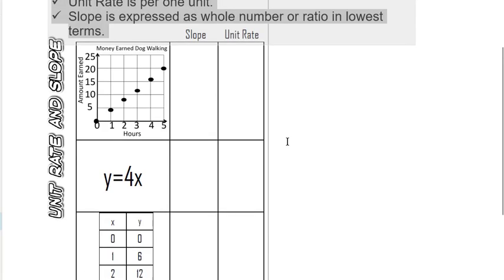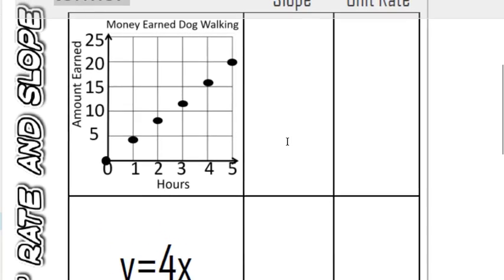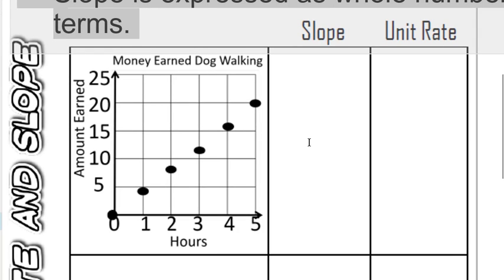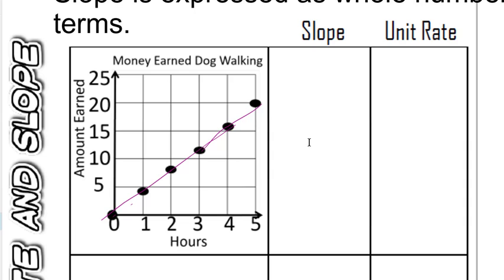I'm going to zoom in here on our different representations. I have a graph, and on my graph I can find the slope. Since this is a proportional relationship, it's going to be a straight line through my origin here. I can go to this point, 5 and 20.